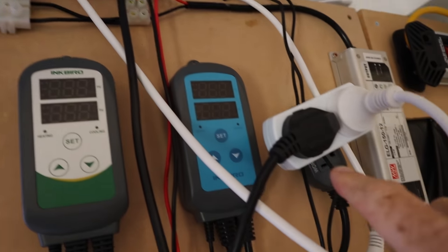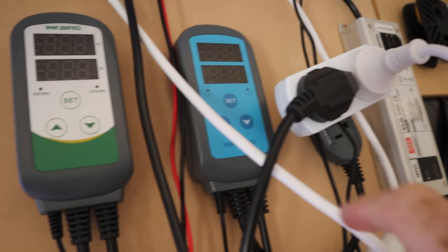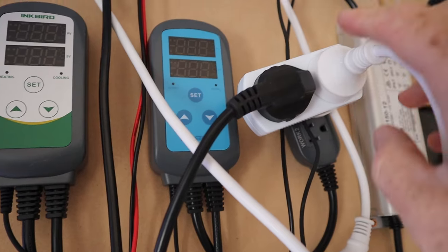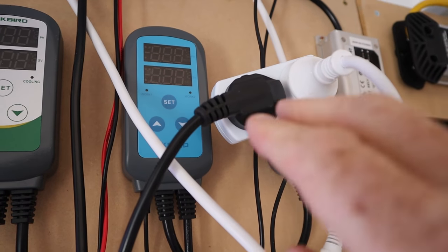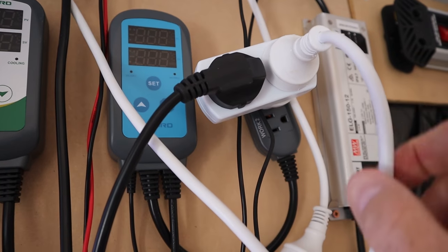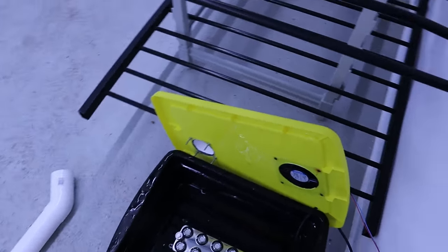That then runs down into the inkbird controller here, which is on an American plug. That's why I've got all these adapters on it, because we use the Kiwi plugs like this here. So that runs into the inkbird controller - that goes to the mister, and then this other one runs down to the fan on top.